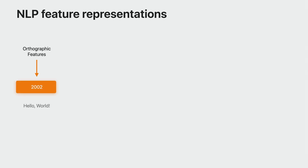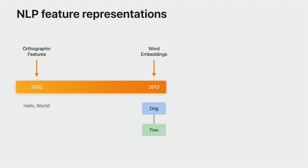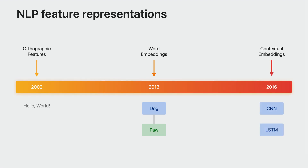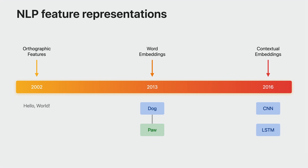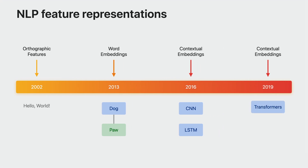The development of NLP as a field can be traced fairly closely just by the development of increasingly sophisticated versions of the input layers. Ten or twenty years ago, these were simple orthographic features. Then, about a decade ago, things moved to the use of static word embeddings, such as Word2Vec and GloVe. Then, to contextual word embeddings based on neural network models, such as CNNs and LSTMs. And, more recently, transformer-based language models.